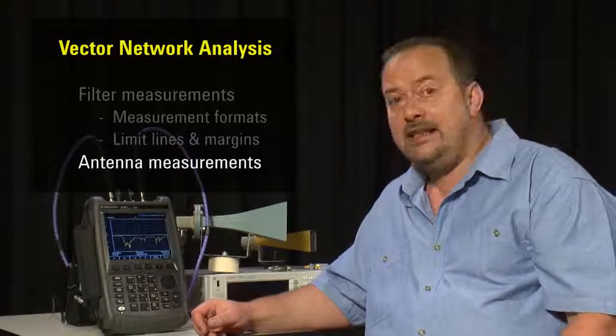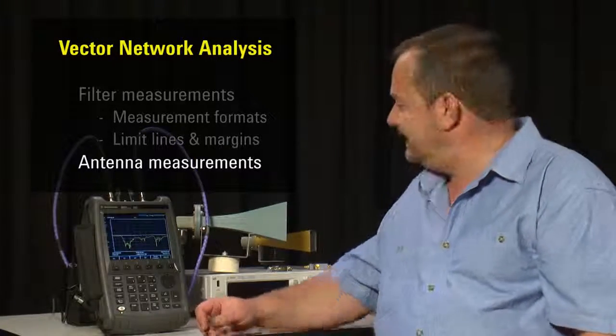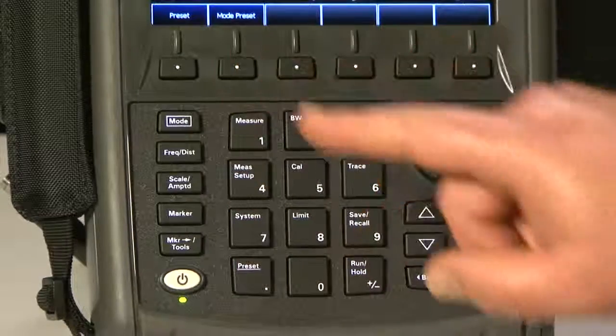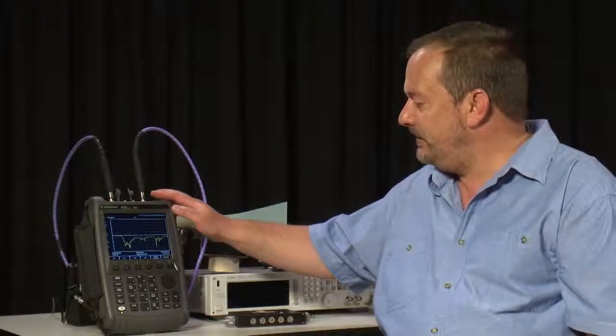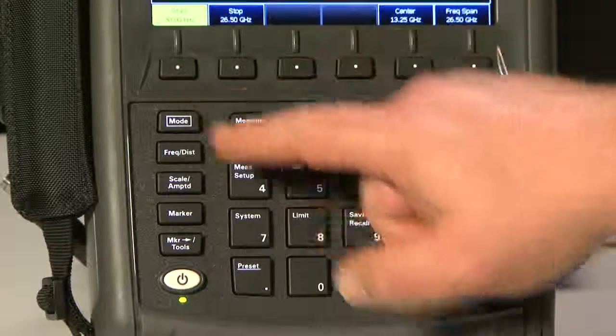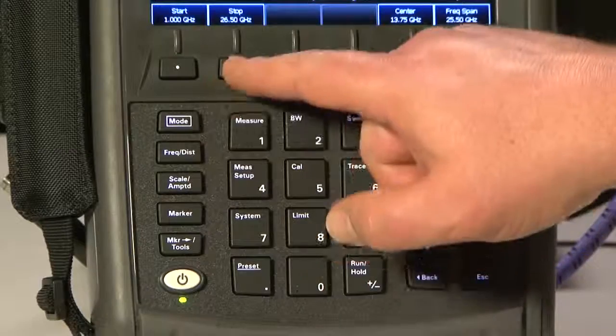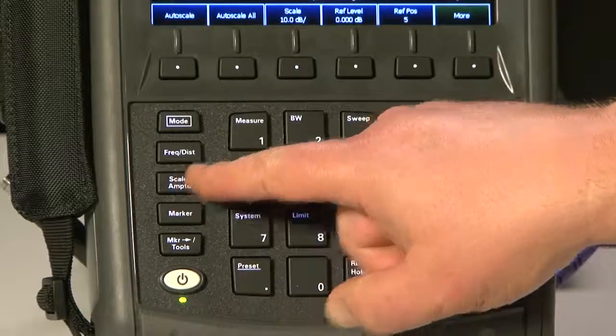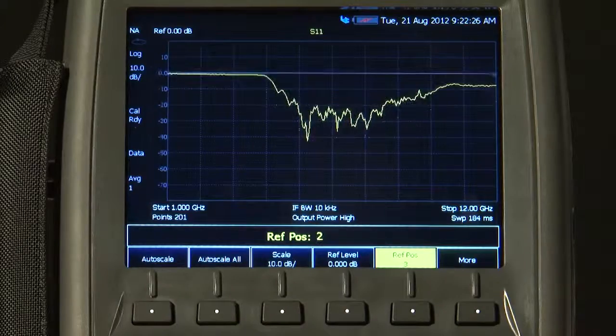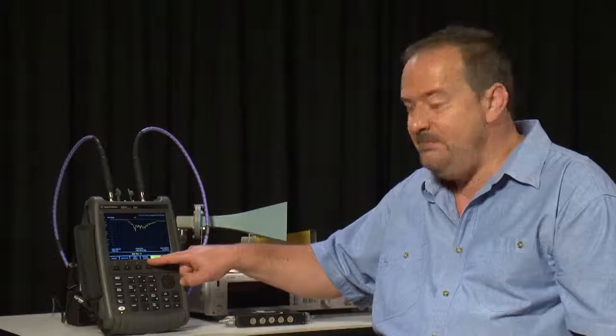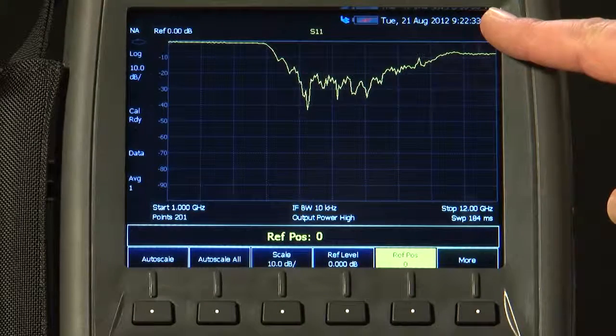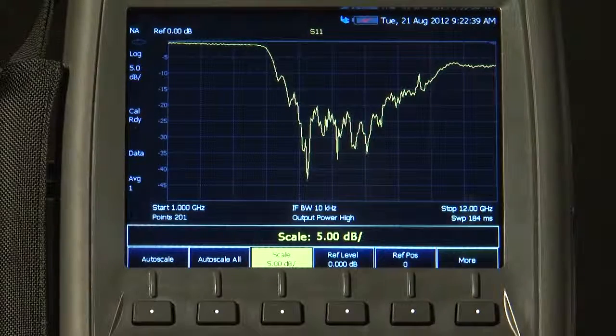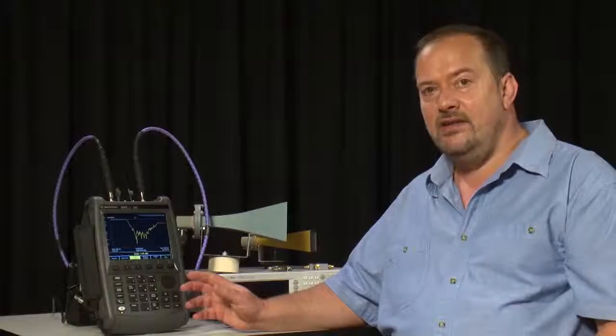In this example, I want to show you how quickly the FieldFox can be set up to make a quick measurement, in this instance, the return loss of this microwave horn antenna. I will press the Preset key and Mode preset. That puts the instrument back to its factory default state. We will set a frequency from 1 GHz to 12 GHz. I will press the Amplitude button. We will set the reference position to 0, and the reference level is 0 dB, meaning that the top line on the display is 0 dB. The scale is 10 dB. I will change that to 5, so we can see a bit more detail of the return loss trace.